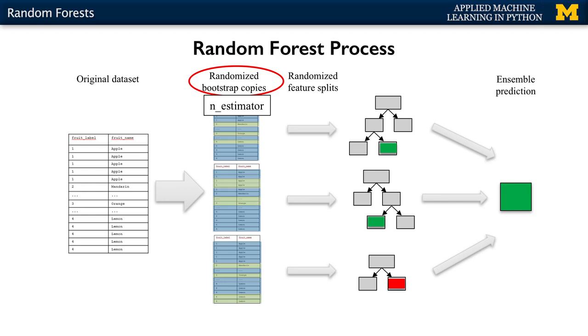To create a random forest model, you first decide on how many trees to build. This is set using the n_estimators parameter for both RandomForestClassifier and RandomForestRegressor.